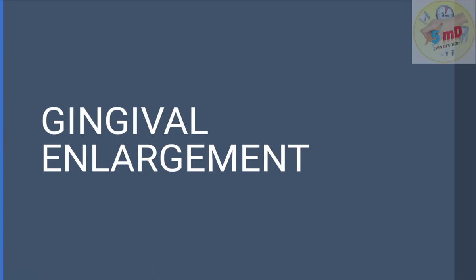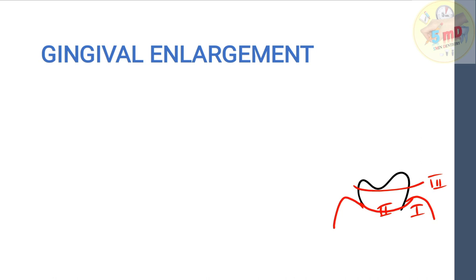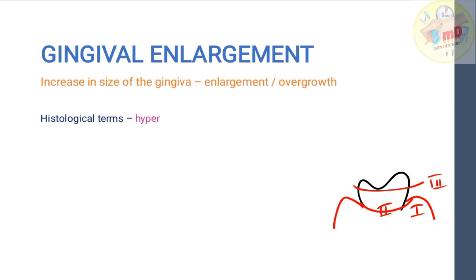Hello all. In this video we will see about gingival enlargement — an important question in periodontics which you need to know for either a short answer or an essay. By definition, gingival enlargement is an increase in the size of the gingiva. It is also known as overgrowth. Histologically, certain terms were used: hypertrophy, hyperplasia, and fibrosis, but these terms are not used clinically nowadays.